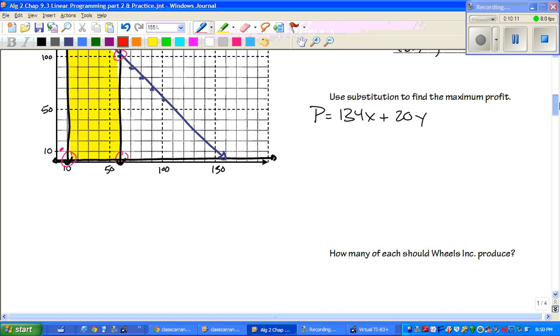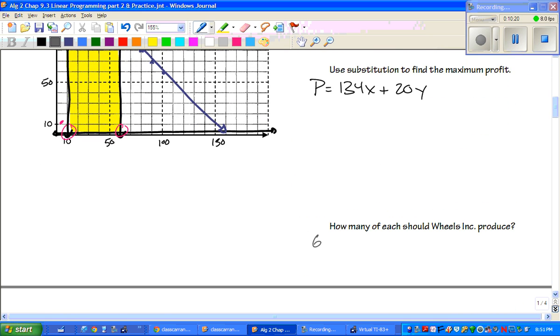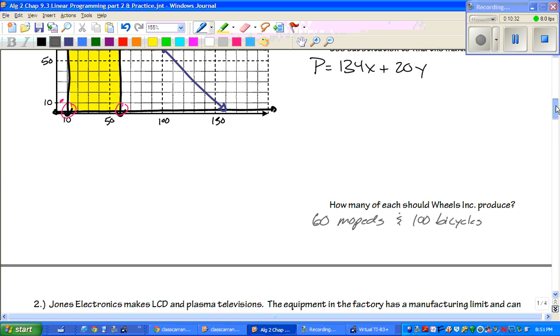So, to maximize their profits, there's the winner. And so, how many of each one should they produce? Well, they should produce 60 mopeds and 100 bicycles.